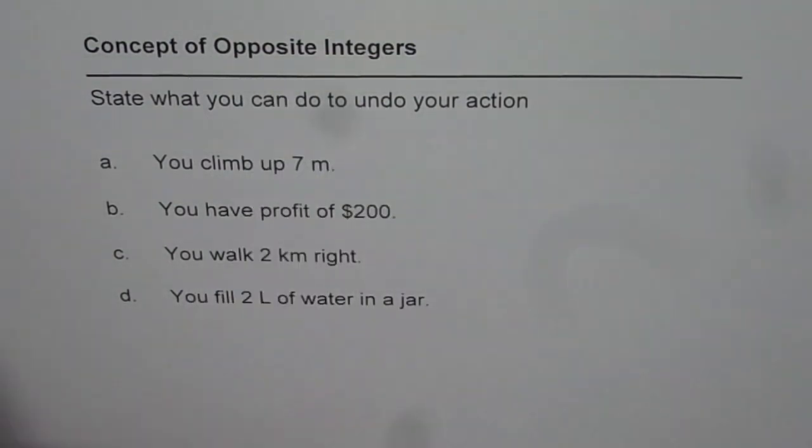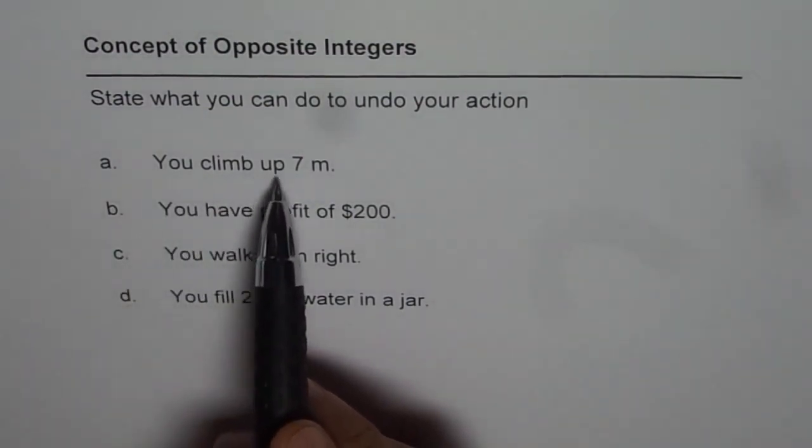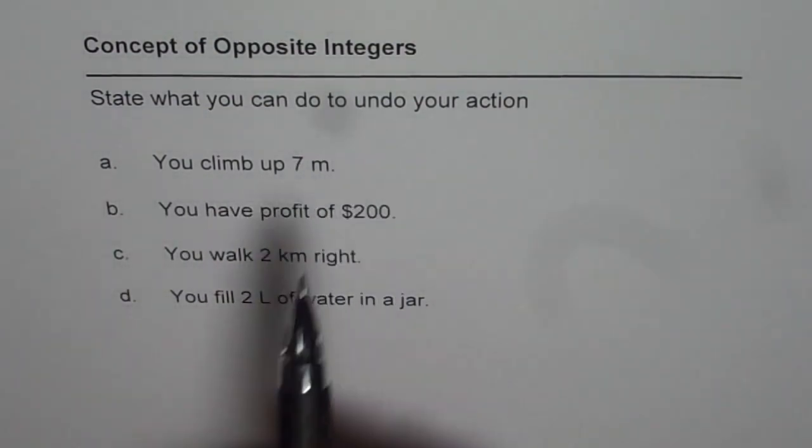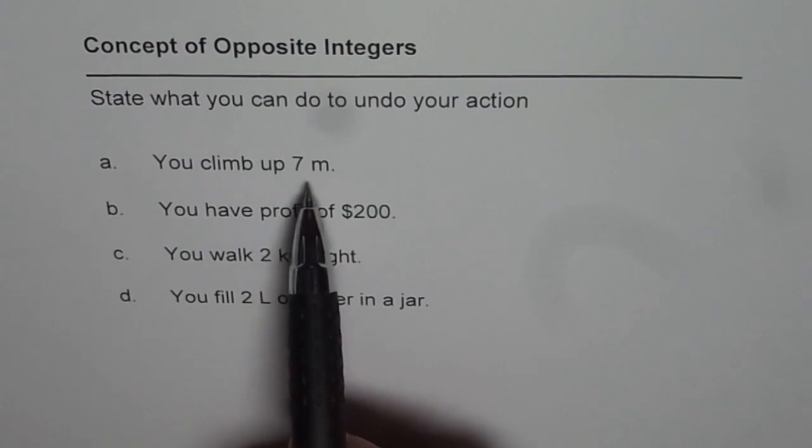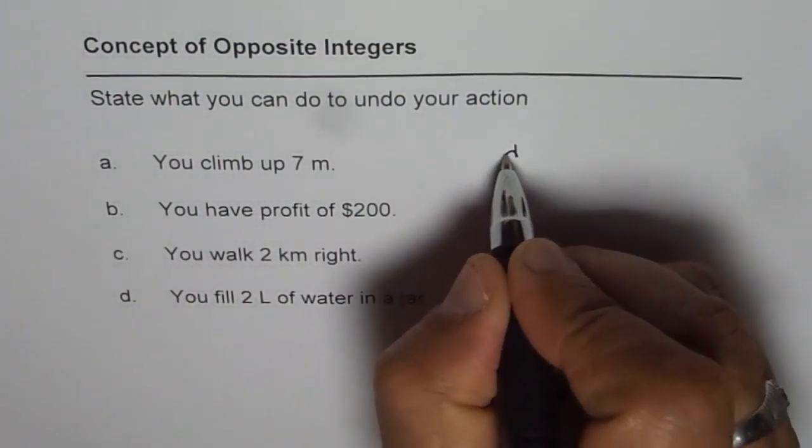Well, that is what opposite integers will do. You climb up 7 meters, that is what you do. So what do you do to undo this? That means you can climb down, right?